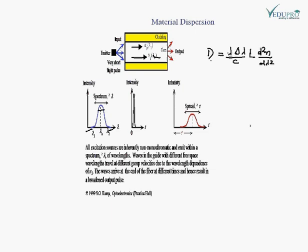The spectral width delta d is given by the equation: d = lambda × (d²n / d lambda²) × (delta lambda / c) × L, where lambda is the peak wavelength of light, delta lambda is the spectral width, L is the distance traveled by the light pulse in the core, and n is the refractive index of the material core.